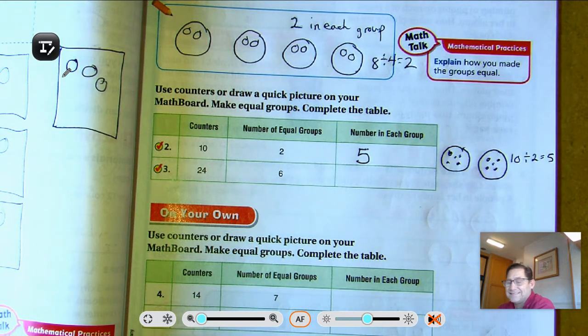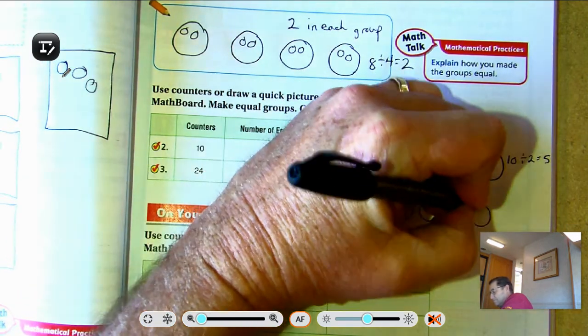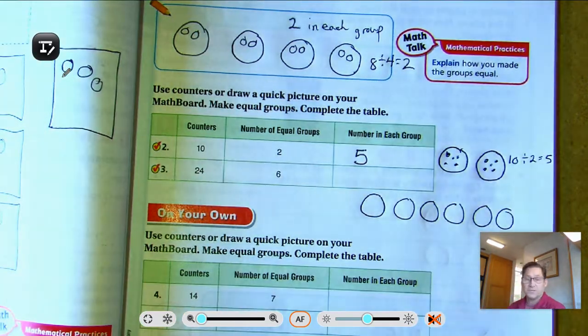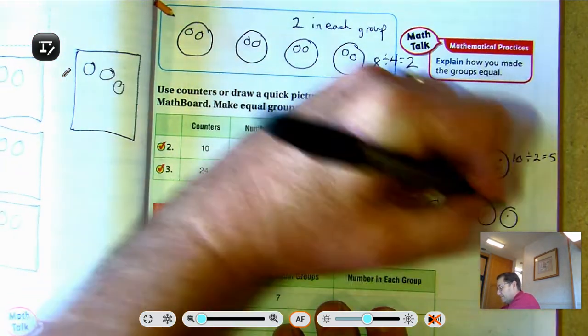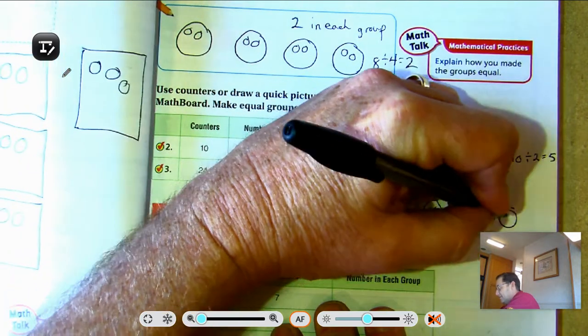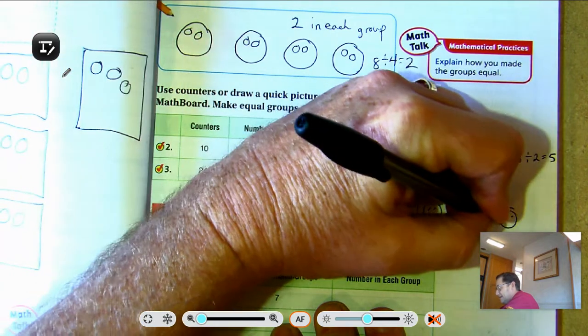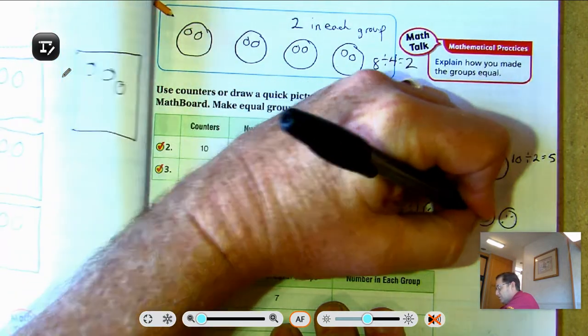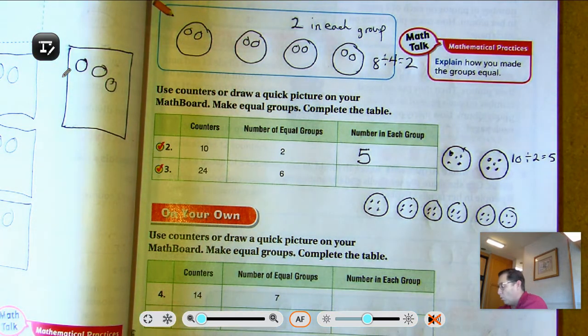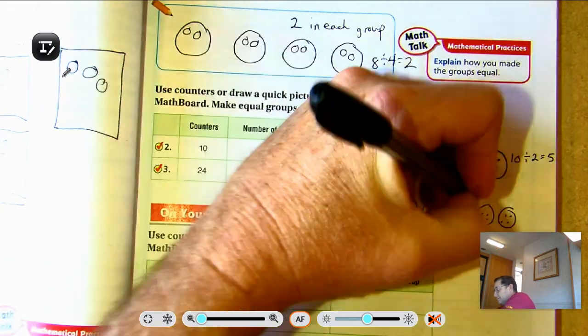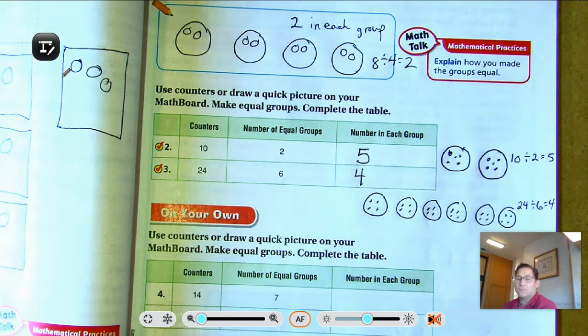24 into 6 equal groups. Okay, and we're going to share 24 into these 6 groups. 1, 2, 3, 4, 5, 6, 7, 8, 9, 10, 11, 12, 13, 14, 15, 16, 17, 18, 19, 20, 21, 22, 23, 24. All right, so I shared all 24, and it looks like we have 4 in each group. And that division problem would be 24 divided by 6 equals 4.